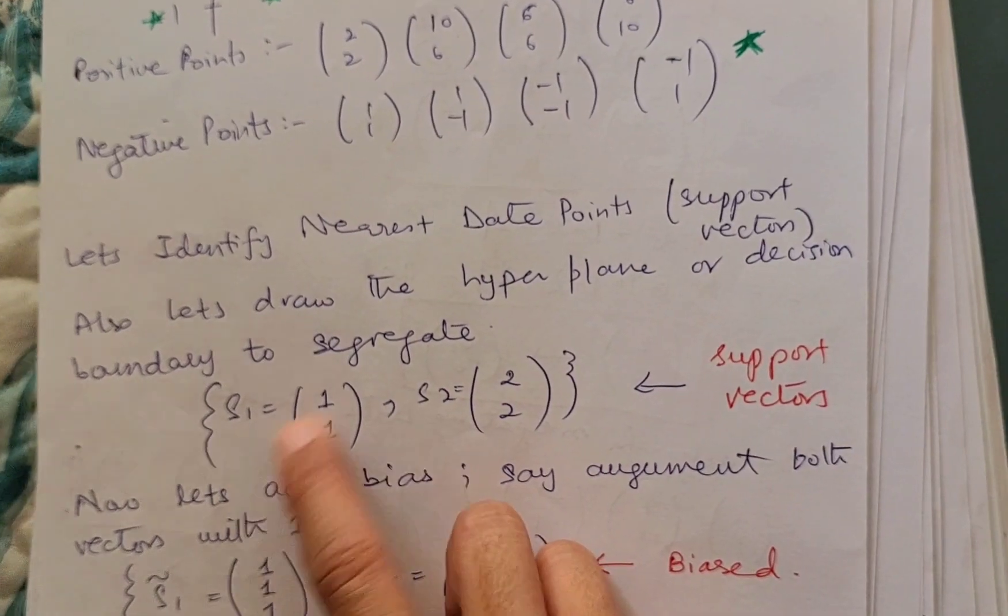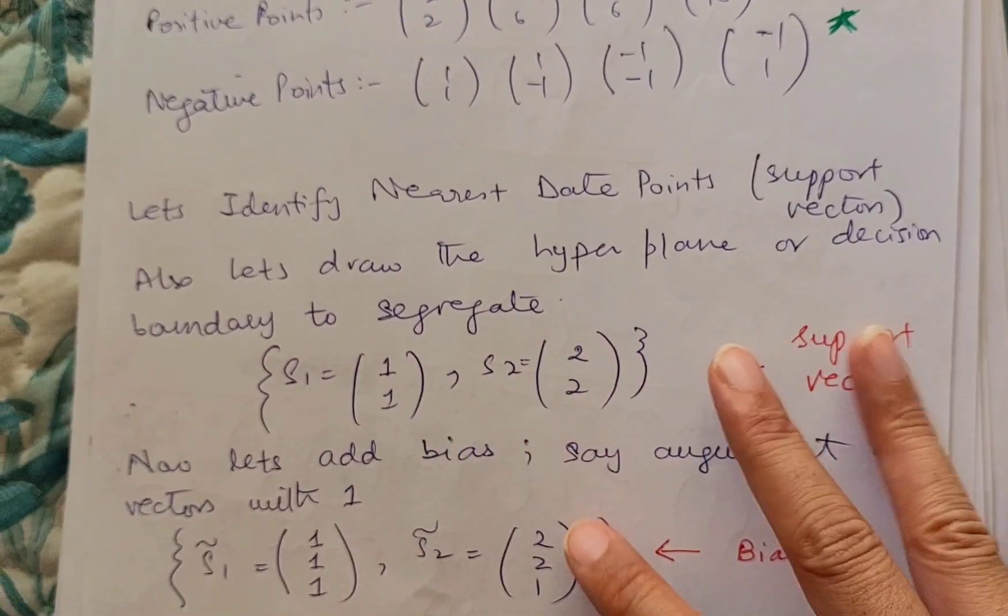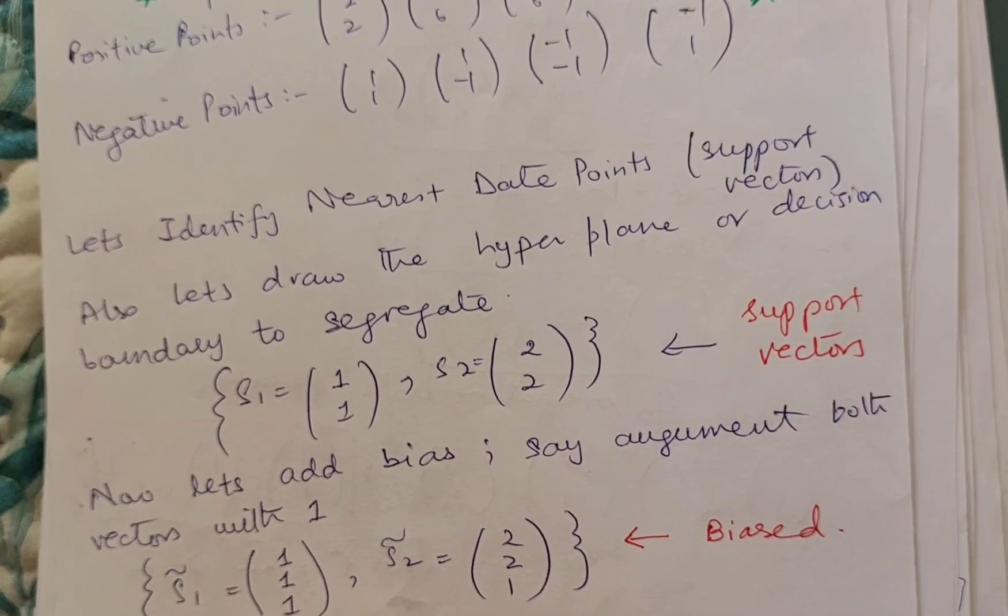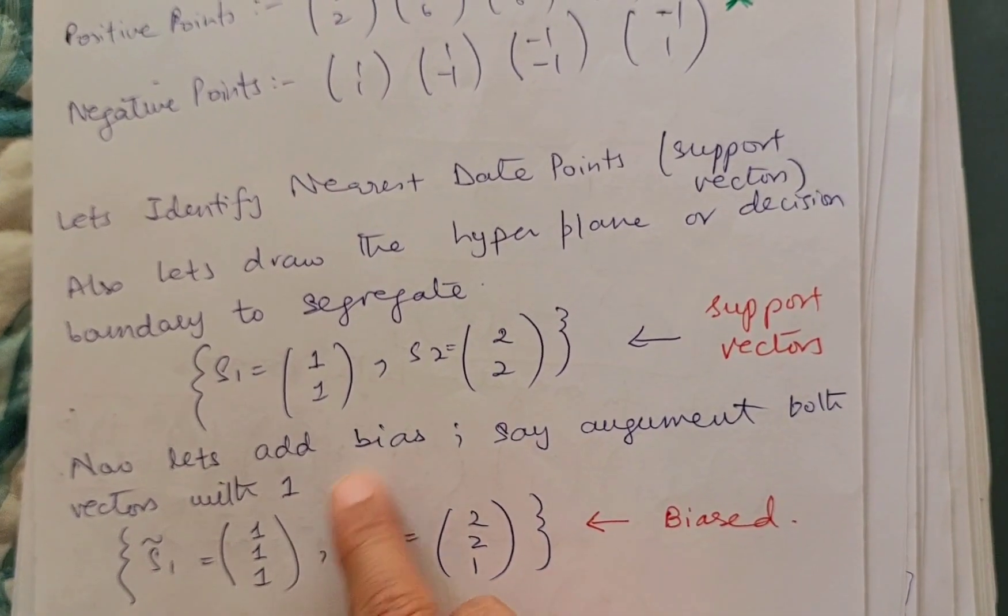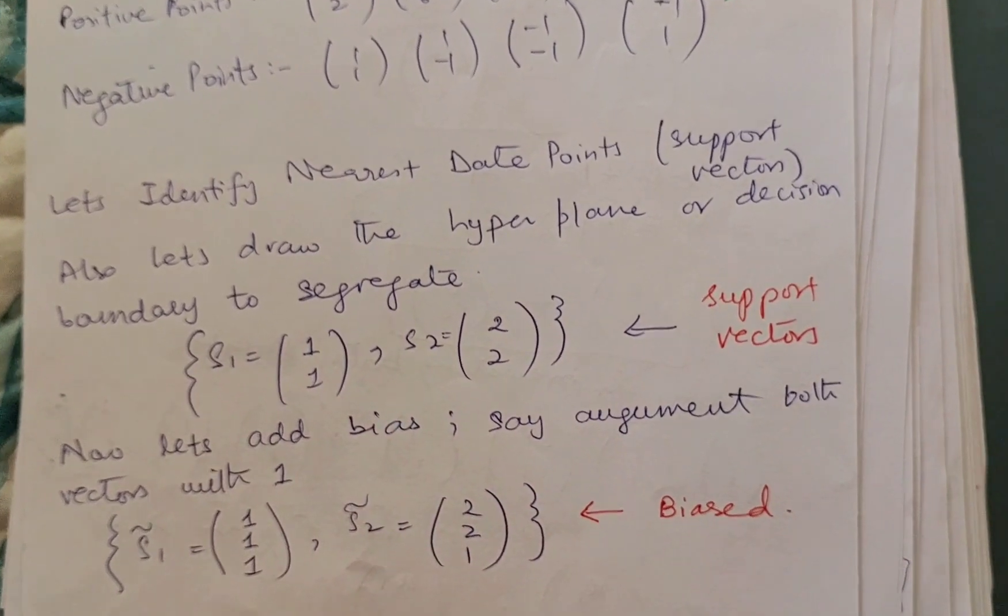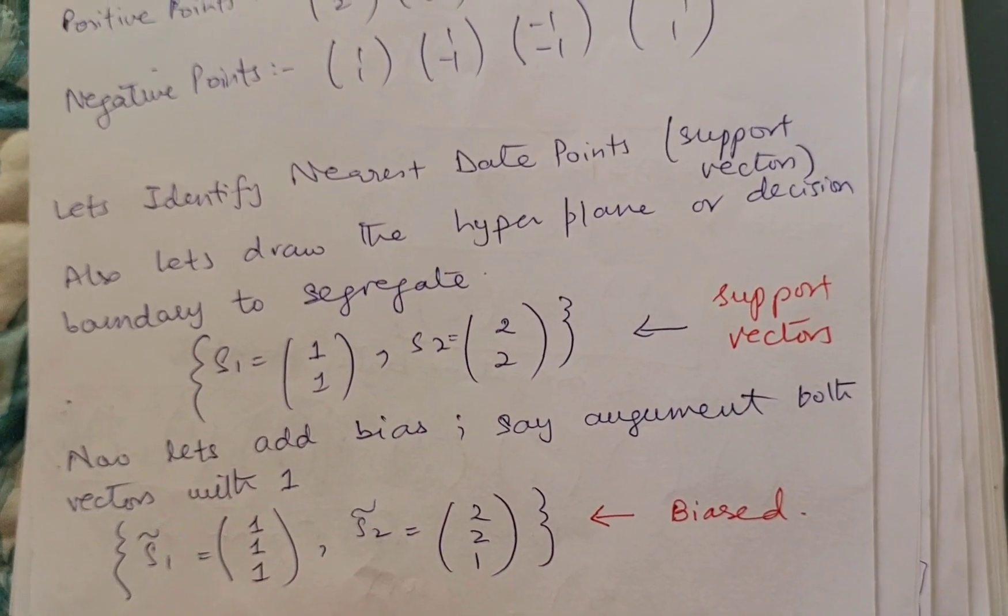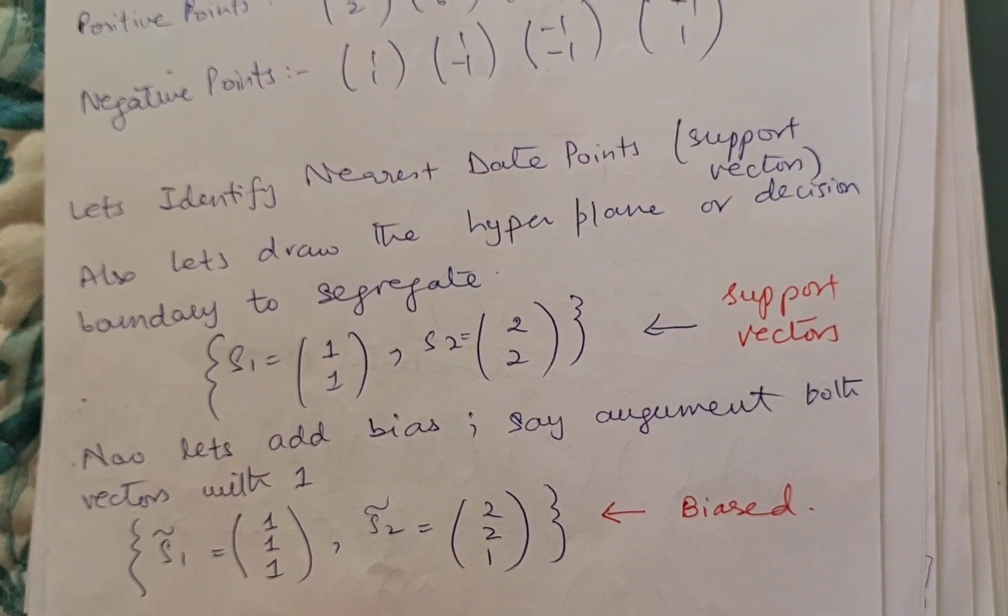See, the points which are closest—if I place a line over here, then the points which will be closest to that line will be called support vectors. So my support vectors are s1 = (1, 1) and s2 = (2, 2). These are the support vectors. If I add a bias with them, we can augment both these vectors with a value 1, then the support vectors will become like this.